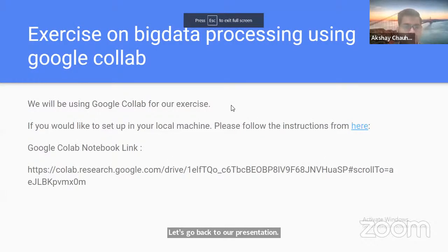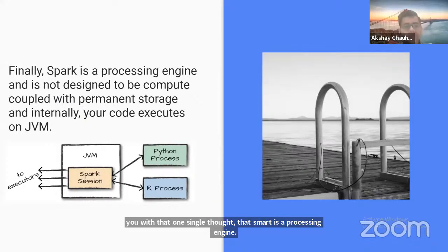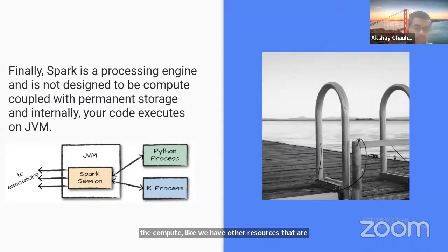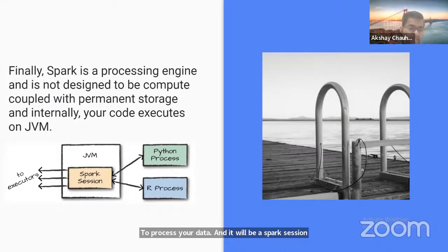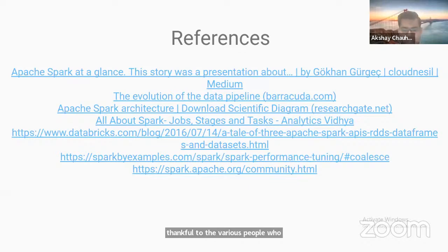To summarize: Spark is a processing engine and doesn't contain permanent storage — compute and storage are decoupled. All your code executes on the JVM, so whether you use Python or R, the JVM processes your data internally. A SparkSession is created as the gateway to communicate with the executors.